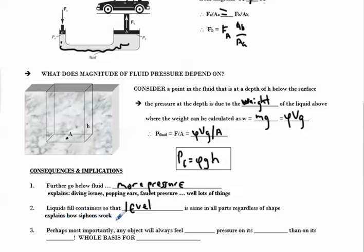But one of the important consequences is the idea of siphons. You can get water to move from a high level to a low level pretty much on its own because the water will want to seek its own level to equalize pressure. And perhaps the most important, any object will always feel more pressure on its bottom than on its top. And this is the whole basis for our next topic in this chapter, and that's buoyancy.